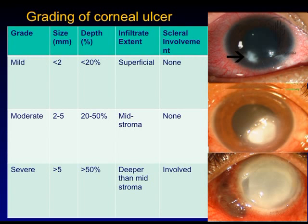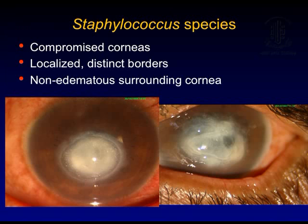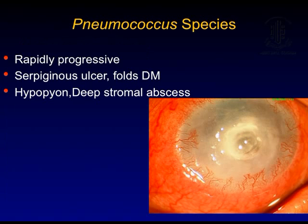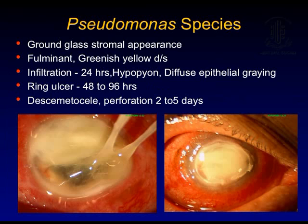After grading ulcers as mild, moderate, or severe, one must look at ulcer characteristics, as certain organisms have specific features. Staphylococcal ulcers occur in compromised corneas with localized distinct borders but a clear surrounding cornea. Pneumococcal ulcers are rapidly progressive with serpiginous ulcer, hypopyon, and deep stromal abscess. Pseudomonas ulcers have a round glass appearance, greenish-yellowish discharge, ring ulcer, and generally perforate in two to five days.